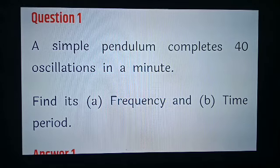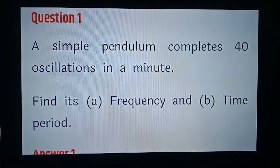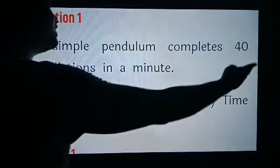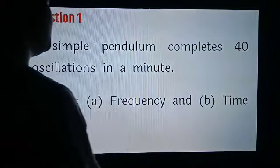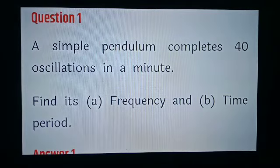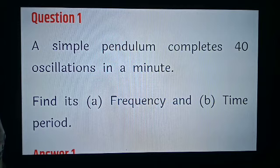Today we will discuss numericals on simple pendulum. In the first example, a simple pendulum completes 40 oscillations in 1 minute. So the number of oscillations is 40 and time is 1 minute or 60 seconds. We have to find out the frequency and the time period.